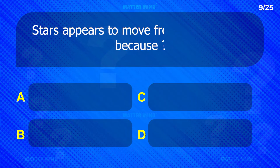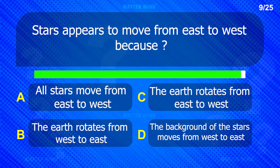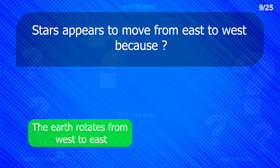Stars appear to move from east to west because the earth rotates from west to east.